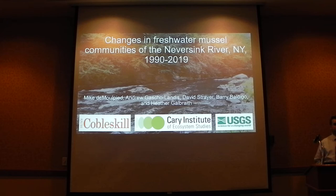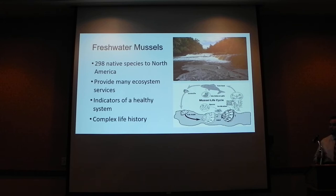Thanks for coming out. I'm going to talk about freshwater mussels. To give you a little background, there are 298 species here in North America, but something like 70% of these species are listed with some kind of impairment, which makes them one of the most impacted groups of organisms on the continent.